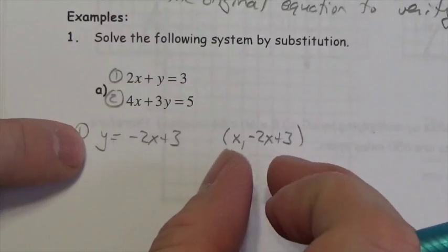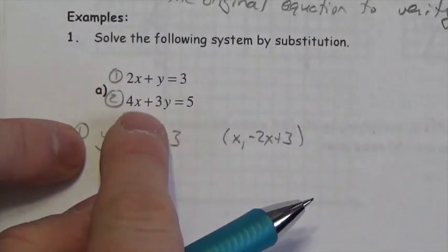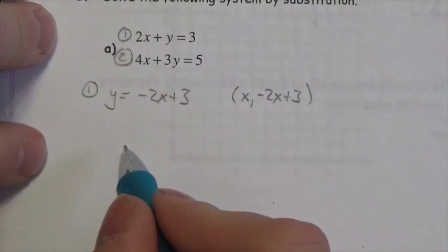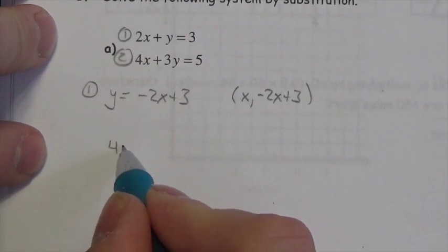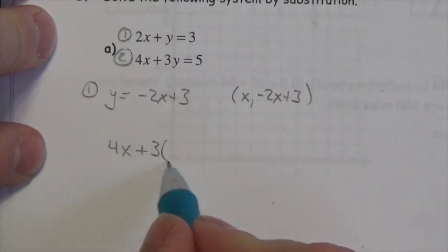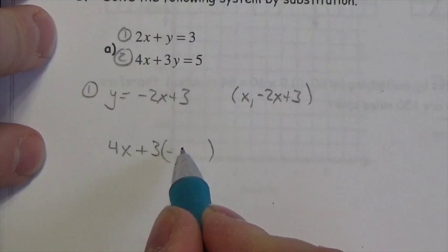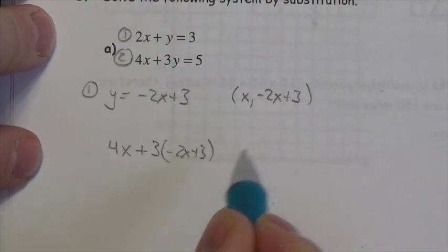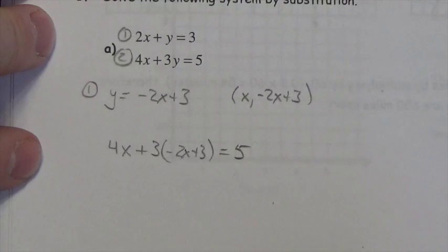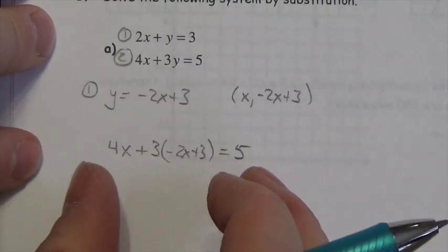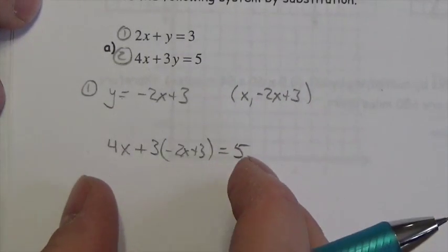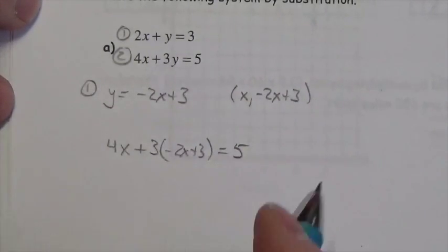I'm going to substitute that point into the other equation. Plugging x in doesn't change anything. So this is going to be 4 times x plus 3 times that expression — and because that's a binomial, I have to put parentheses around it, because the whole thing is y. That equals 5. Now I've got one equation with one unknown instead of two equations with two unknowns.